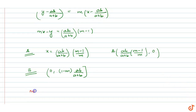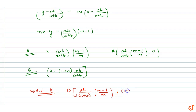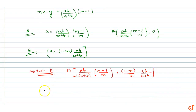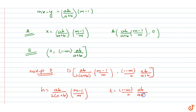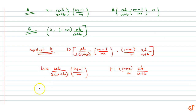The midpoint D of AB has coordinates: h = ab(m−1)/(2m(a+b)) and k = (1−m)·ab/(2(a+b)). From h, we get ab/(a+b) = 2hm/(m−1). Substituting into k gives k = (1−m)/2 · 2hm/(m−1), which simplifies to m = −k/h.